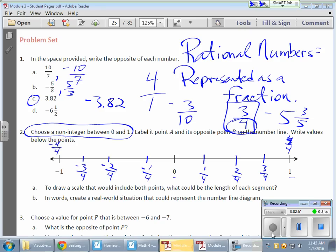Since I chose three-quarters as my rational number, or my non-integer between zero and one, there it is. You can see it's between zero and one. I'm going to label that point A. And I need its opposite on point B.